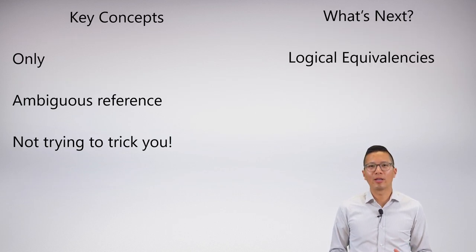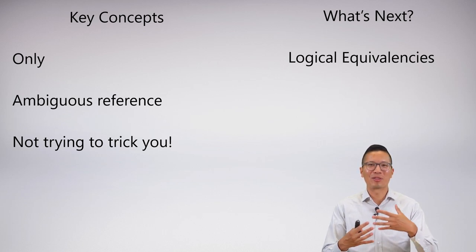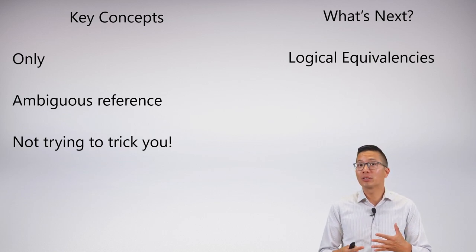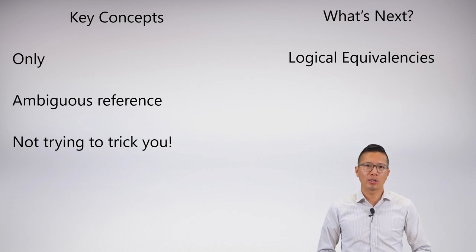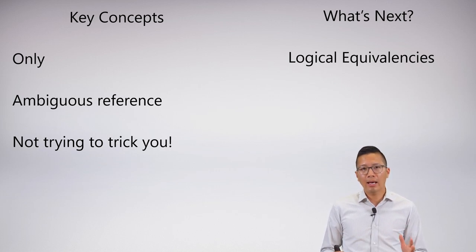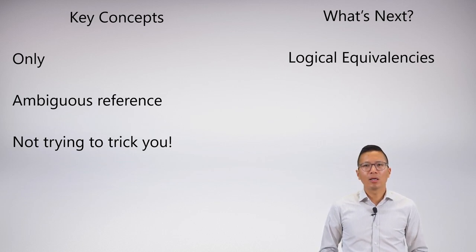The key concept here is that I'm not trying to trick you. I went through all these difficult things — it could be this, could be that — because I want you to know there's ambiguous reference and ambiguous stylistic variance in the English language. You have to be careful, especially with the word 'only', non-restrictive clauses, and so on. But I'm not trying to trick you when it comes to actually assessing your skills in logic on a test. Coming up next, we're going to look at some logical equivalencies and talk about them pretty quickly. Thanks.